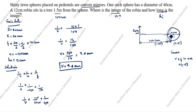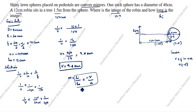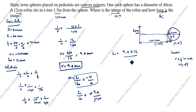Next, we find the image height h-i. The magnification formula is: m equals h-i over h-o, which equals minus v over u. We know h-o is 12, v is 9.4, and u is minus 150. So h-i over 12 equals minus 9.4 divided by minus 150. The negatives cancel, giving h-i equals 9.4 times 12 divided by 150, which equals approximately 0.75 centimeters.